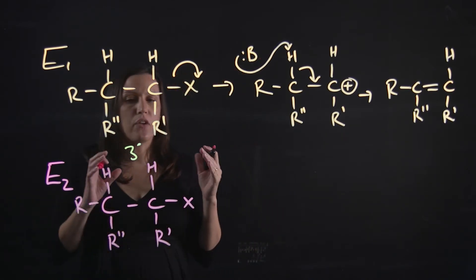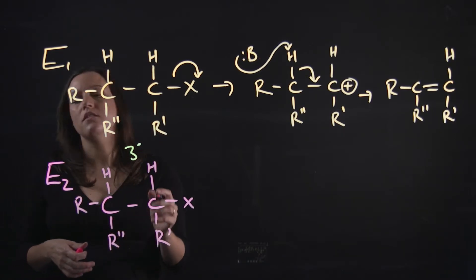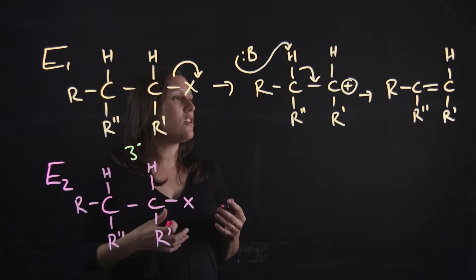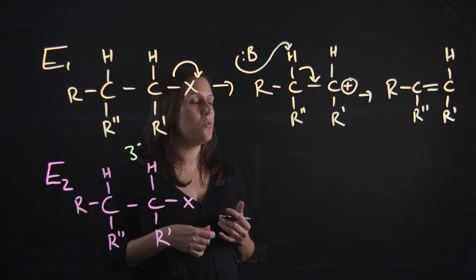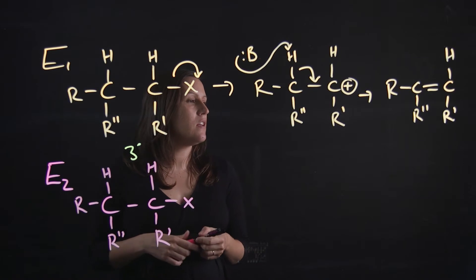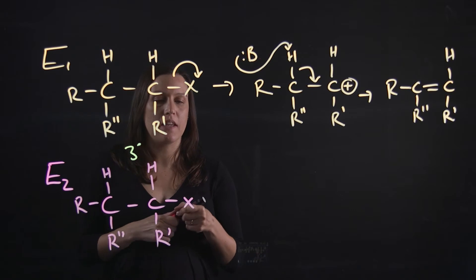Now we've got a strong bulky base. So we've got things like sodium ethoxide, methyl ethoxide, LDA, and tert-butoxide. So they're like our strong bulky bases.